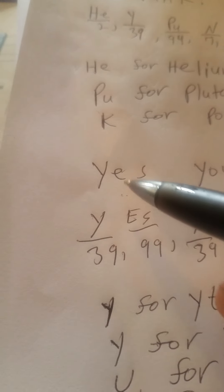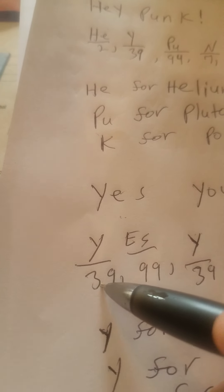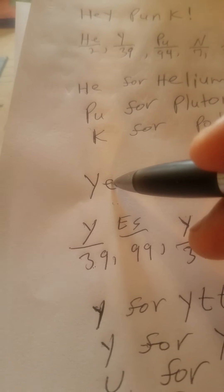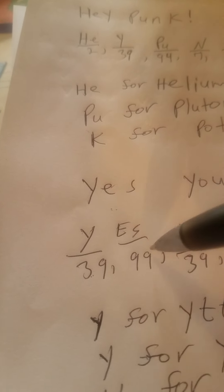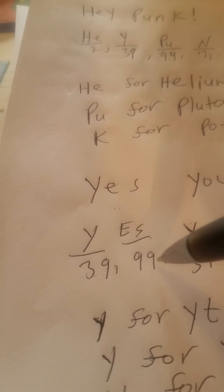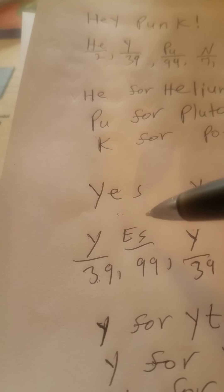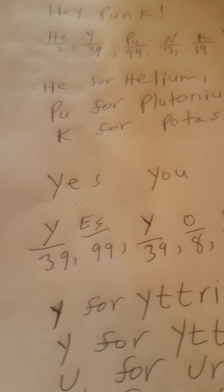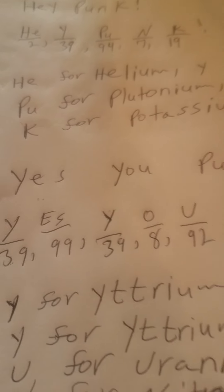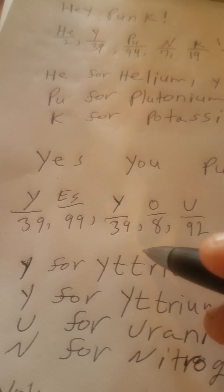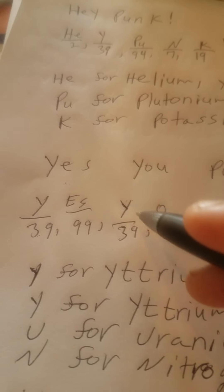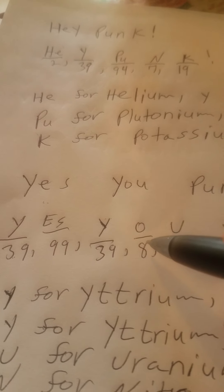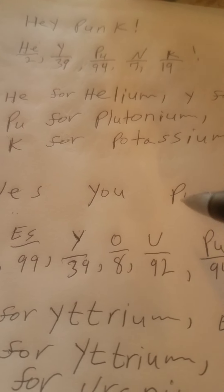Now for 'Yes you punk!': the exclamation point 'Yes' — capital Y for Yttrium (39), then capital E and small s for Einsteinium, atomic number 99. Then the 'Y' again is 39 for Yttrium, and the capital O is for Oxygen, atomic number 8.